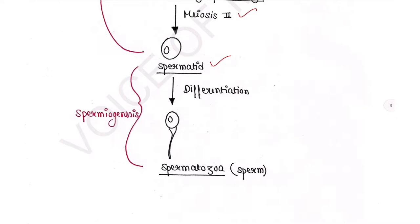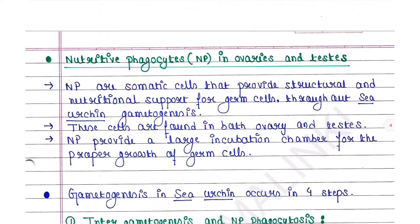So the process from spermatogonia to spermatids is called spermatogenesis. These spermatids will then be differentiated into mature sperm or spermatozoa. The process that leads to production of sperm from spermatids is called spermiogenesis.